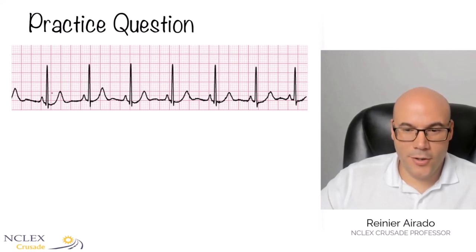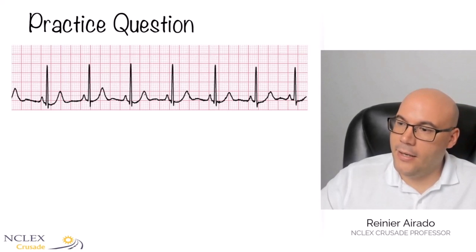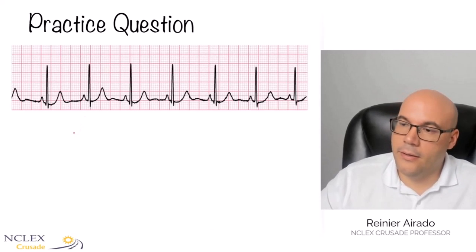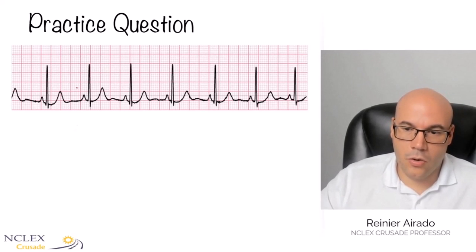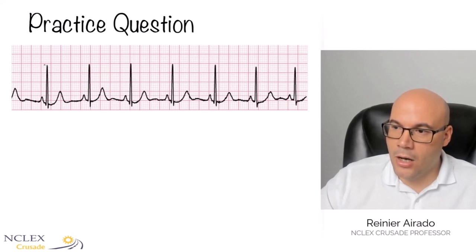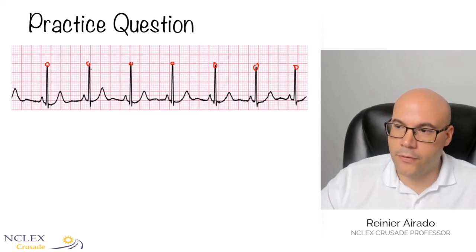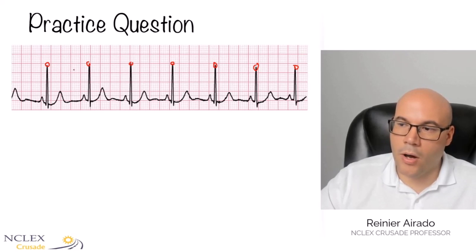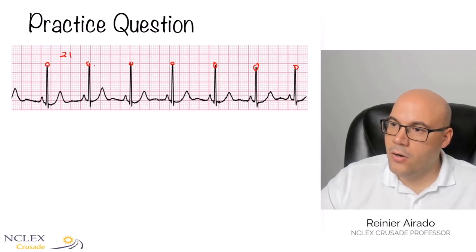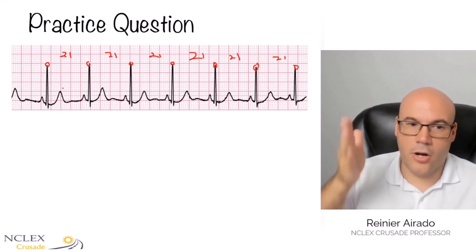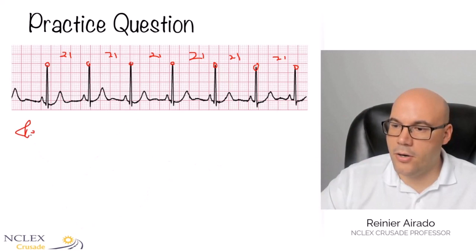Let's analyze this EKG strip. The first thing we need to identify is whether this is a regular or irregular rhythm. If we look at the R-to-R interval, we can see that it is constant. Counting the number of small boxes between one R and the next R, it is about 21 — 21 here, 21 here, and 21 here. So it is regular.